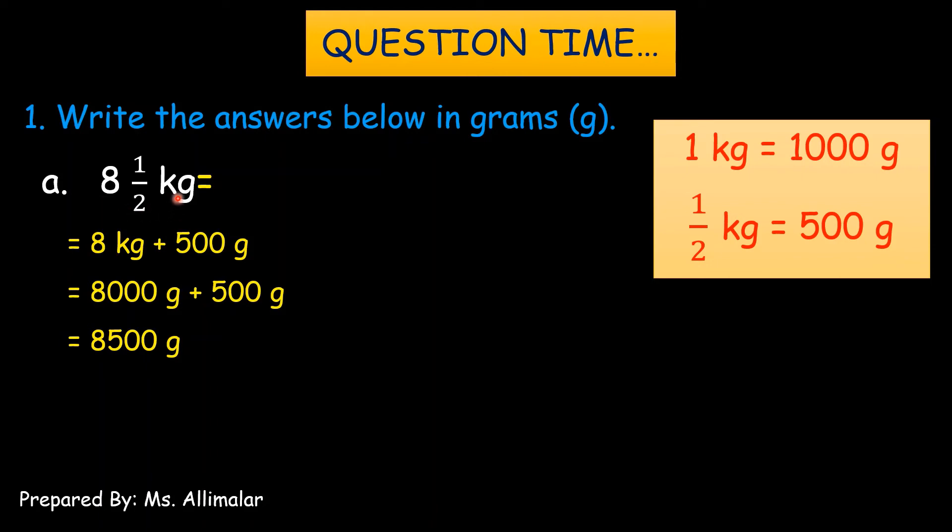Now, they want you to write this in grams. So, you have to convert. Am I right now? How to convert? 8 1 over 2 kg. Now, we're going to separate 8 and 1 over 2 here. Now, how to separate? So, can you see 8 here? Yeah. This 8, you'll just put here. This is actually 8 kg plus 1 over 2 kg.